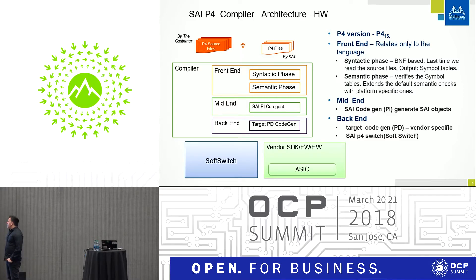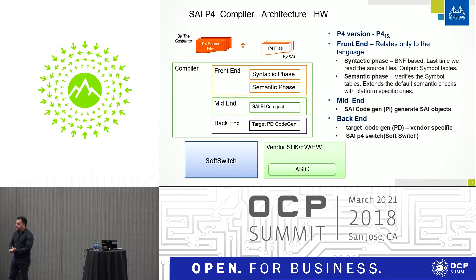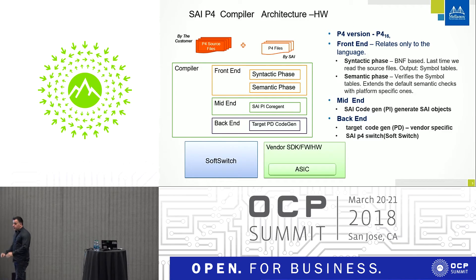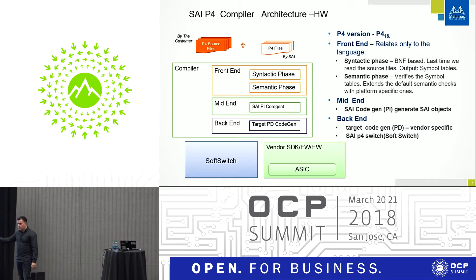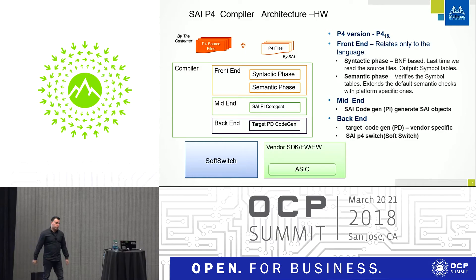The compiler is based on P4-16. The idea is to create layers. The front-end layer is a shared layer provided by the Barefoot guys. It does the syntactic and semantic phases of the language itself. Next, we created the mid-layer, which will also be open source. This layer generates the SAI API — the auto-generated Flex API. And the back-end layer is per target. There is also another back-end generic layer which is the soft-switch layer, so this compiler can compile the code into the soft switch. You can have a software emulator for the newly written P4 code.